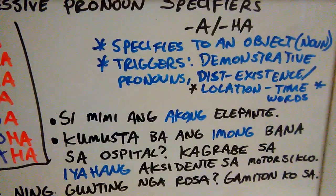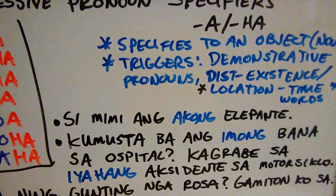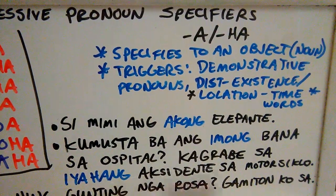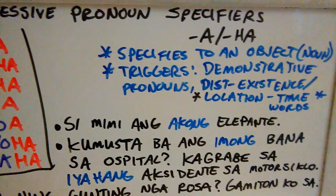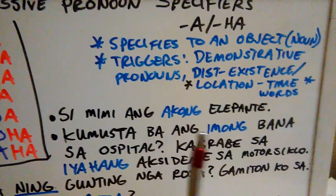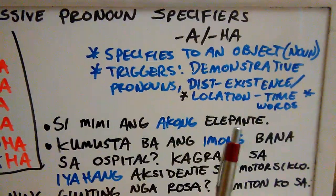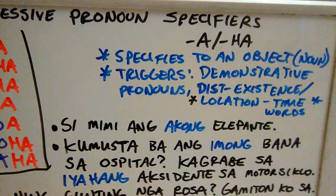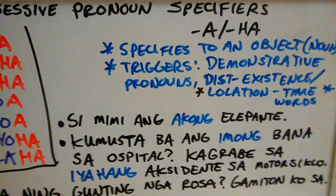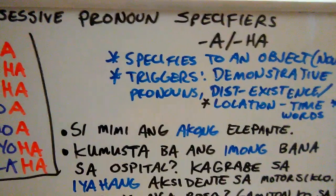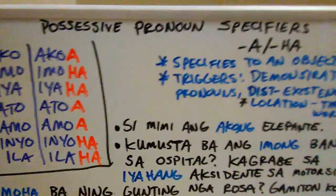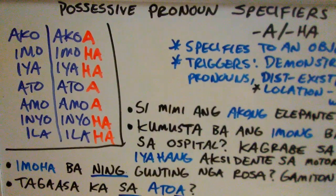Just as with regular specifiers for regular nouns, we have triggers for the possessive pronouns too. These triggers are caused by demonstrative pronouns — very, very common. Demonstrative pronouns are very common triggers that cause the possessive forms, or possessive pronoun forms, to be used. As well as the distance-existence or location-time words, which I'll be talking about in future videos because they are an important part of the Cebuano language. The examples here will help you understand how to use possessive pronoun specifiers and how to distinguish between the two.